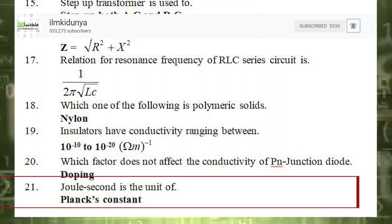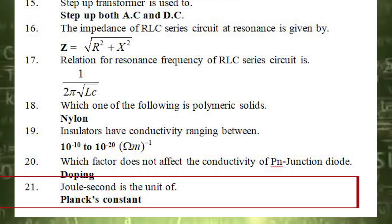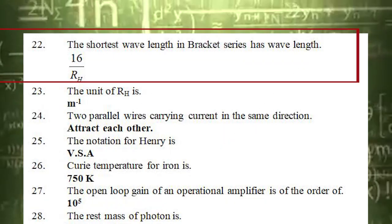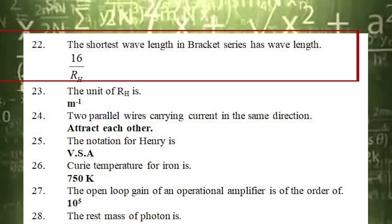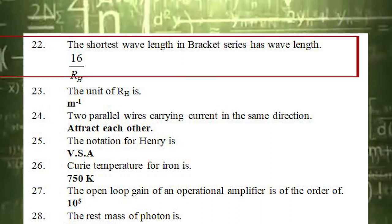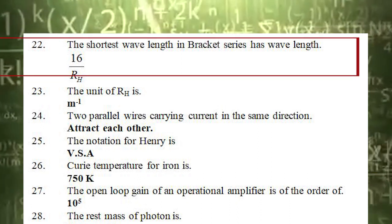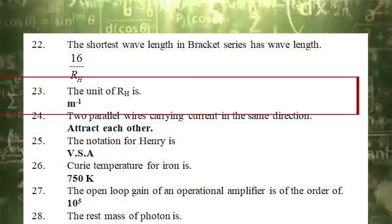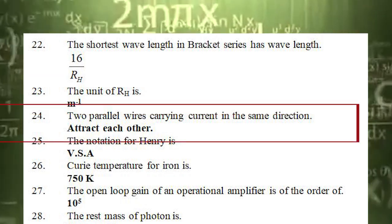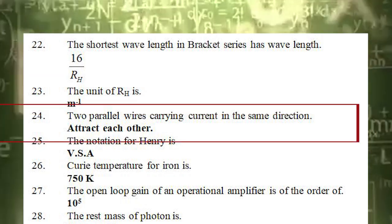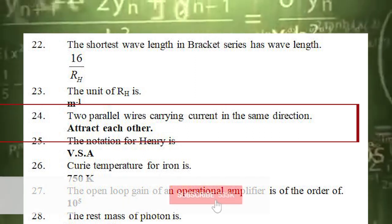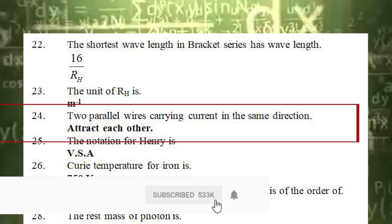The 21st statement is: the unit of — the correct answer is Planck's constant. The 22nd statement is: the shortest wavelength in the Brackett series has wavelength. The correct answer is 16 divided by R_H. The 23rd statement is: the unit of R_H is. The correct option is per meter (m⁻¹). The 24th statement is: two parallel wires carrying current in the same direction. The correct answer is they attract each other.